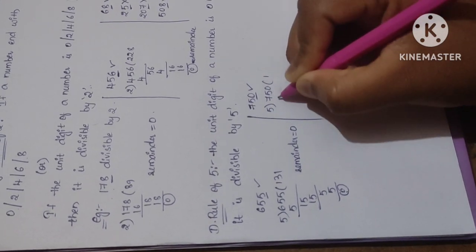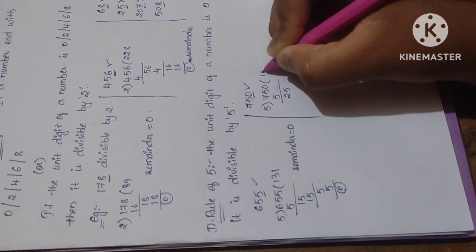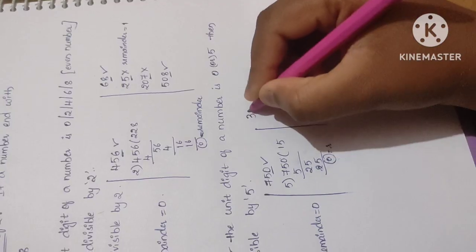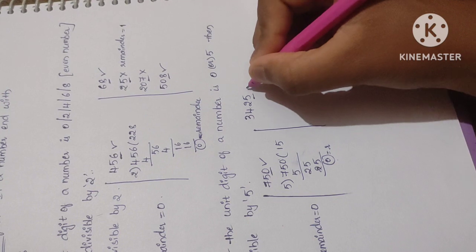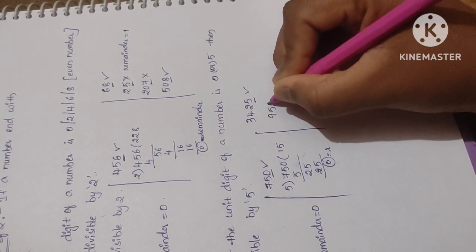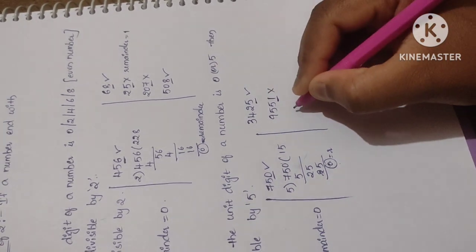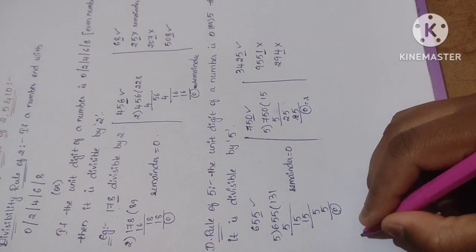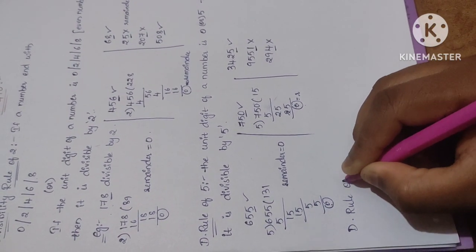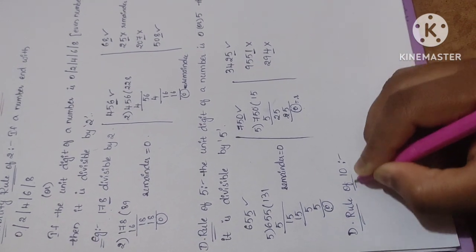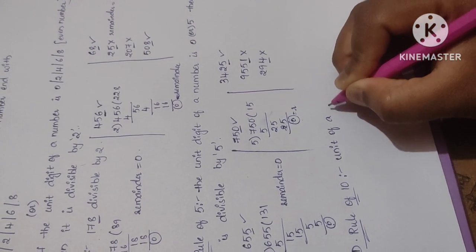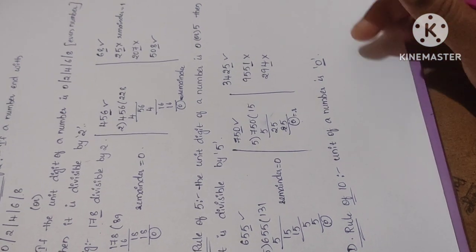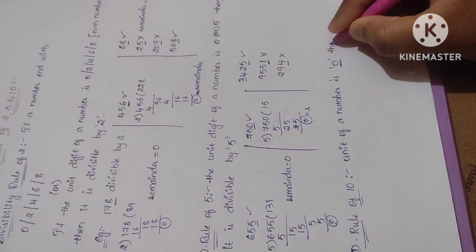Instead of doing the full division, directly check if the unit digit is 0 or 5. Take 750 — unit digit is 0, so it is divisible by 5. More examples: 3425 — unit digit is 5, divisible by 5. 9551 — unit digit is 1, not divisible by 5. 294 — unit digit is 4, not divisible by 5. Next, divisibility rule of 10: if the unit digit is 0, then the number is divisible by 10.